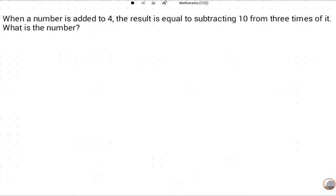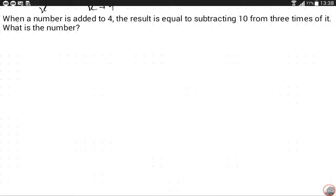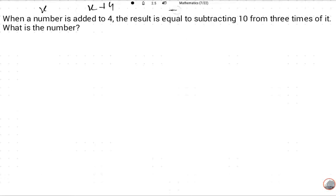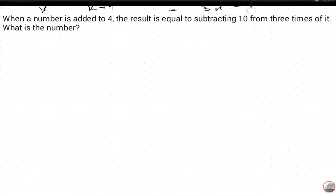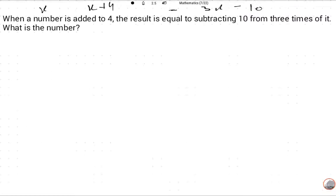What is the number? This is a simple question, not difficult. So what is number? The number is x, added to 4, x plus 4. The result is equal to 3 times of the number subtract minus 10. So basically this is the variables.